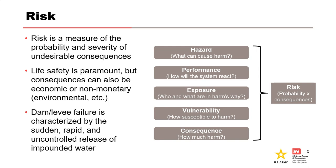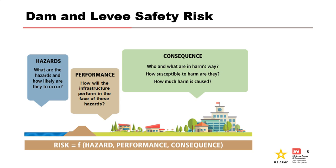We consider the consequences of failure, which will be a function of who or what is downstream at the time of breach inundation and the amount of inundation that results. The Federal Emergency Management Agency's definition for dam and levee failure is used: failure is characterized by the sudden, rapid, and uncontrolled release of impounded water. Dam and levee safety risk will be a function of the hazard and its likelihood, the estimated performance of the structure given the hazard, and the expected consequences. The consequences will be a function of who or what are in harm's way, how susceptible to harm they are, and how much harm is ultimately caused. This figure illustrates the three components that make up the risk equation — hazard, performance, and consequences.